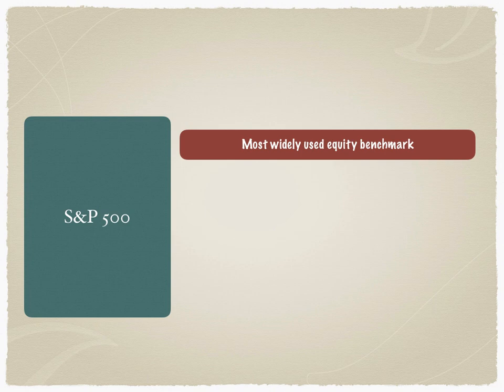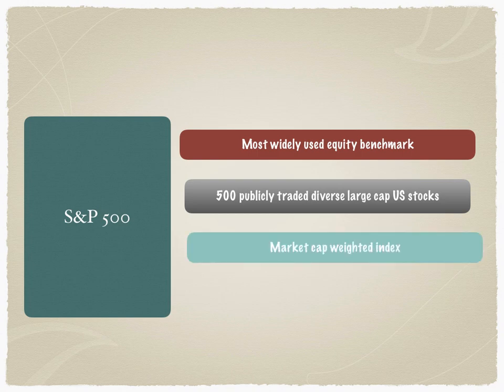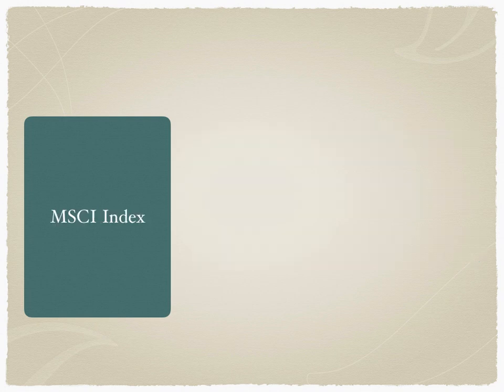S&P stands for Standard & Poor's. The S&P 500 is the most widely used equity benchmark, comprising 500 publicly traded, diverse large-cap US stocks. Compared to the DJIA it's more diverse and broad-based, with far more representation — DJIA has only 30 stocks but S&P 500 has 500 stocks across different sectors. It's a market capitalization weighted index and therefore the most preferred benchmark across the world.